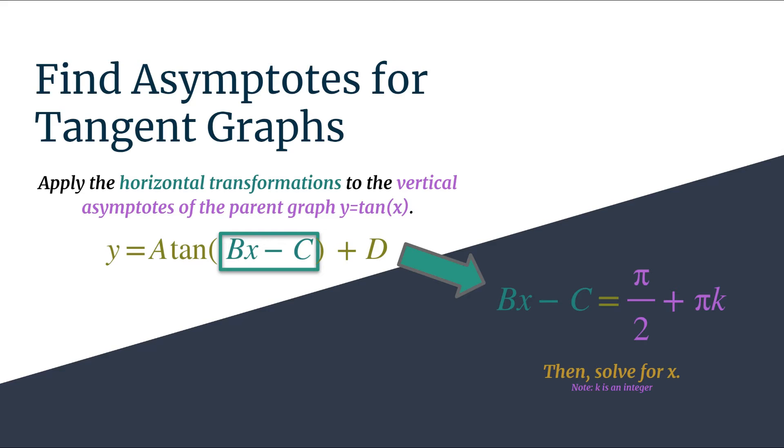Before we see an example, note that k is an integer, and you are creating an asymptote generating equation. If you substitute in different integers for k, you'll get different asymptotes along the graph.